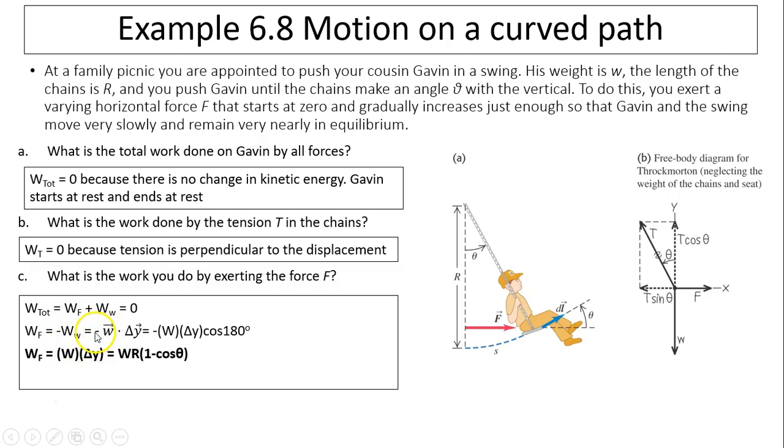Work done by gravity is the dot product of the weight times the displacement of gravity. Since weight is downward and displacement y is positive upward, the two have 180 degree angle. And the negative of 180 gives you positive, so that's weight times the displacement. This is your delta y. And how do you find delta y? Delta y is total r minus this segment, and that segment is r times cosine theta. So the final answer is W times r times 1 minus cosine theta. That is the work done by you on your cousin Gavin.